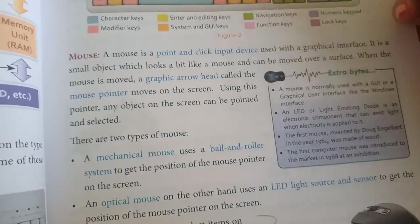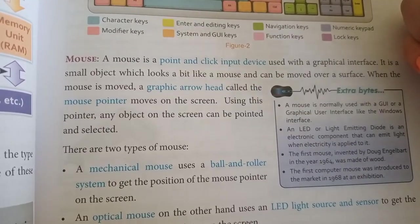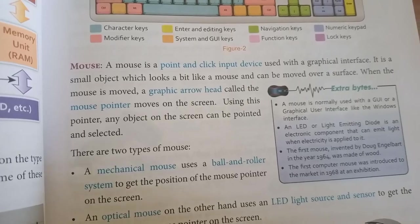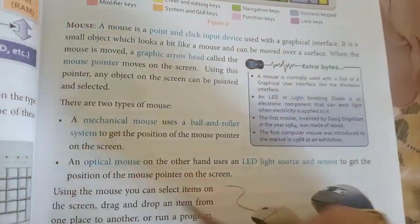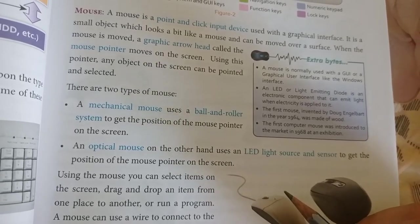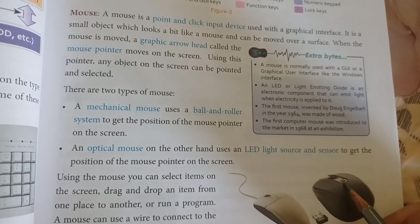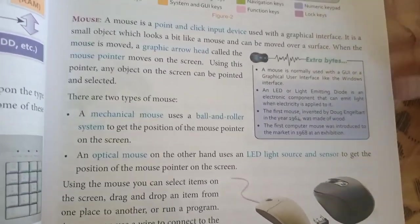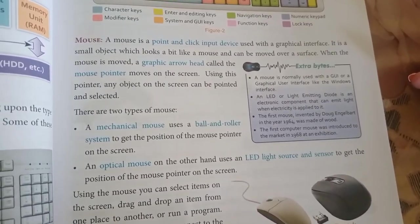Next is the mouse. The mouse is also known as a pointing device — it helps us to point or click an object on the screen. It moves with the help of a graphical arrow displayed on the screen, called the mouse pointer. There are two types of mouse: one is the mechanical mouse, which has a ball and roller, and the pointer moves with the help of it. The second is an optical mouse, which has an LED light source sensor and can also be wireless, working with the help of this LED light source.